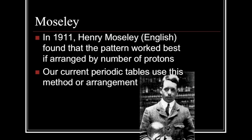It wasn't until 1911 that Henry Moseley found that the pattern worked best if the elements were arranged by the number of protons — the atomic number. Our current Periodic Table uses this method of arrangement. Our Periodic Table is arranged by the number of protons, the atomic number.